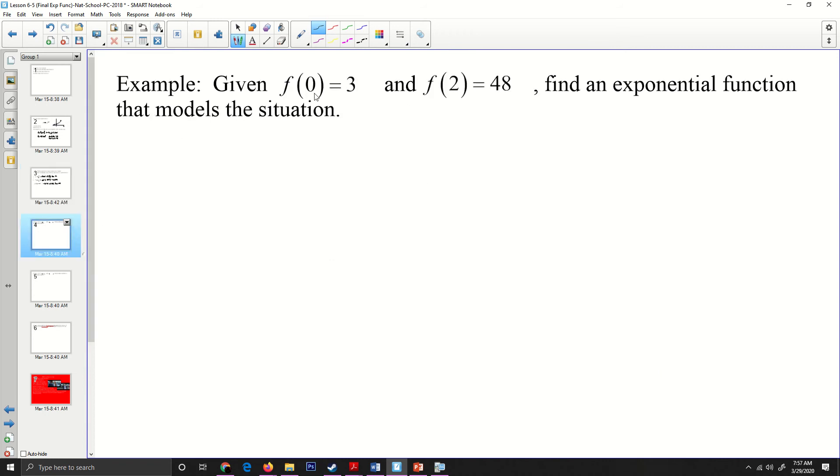Next, an example, given F of zero equals three and F of two equals 48, find the exponential function that models the function. So what we're trying to do is we're trying to come up with an F of X equaling a B to the X. Now the good news in this one, they give us a zero. So this value right here, that's the initial amount. And so what we're trying to do is we're trying to figure out what the function is after we've been given two points. We've been given that we have zero three right here and then two way up here 48. So we're trying to figure out this exponential curve right there.